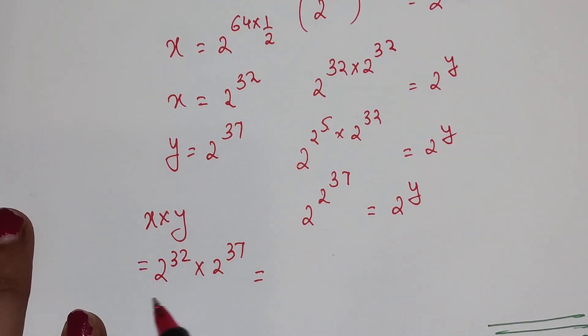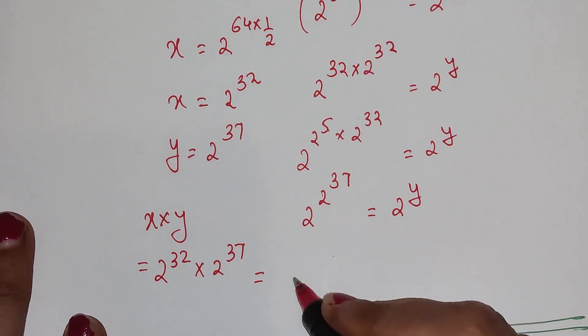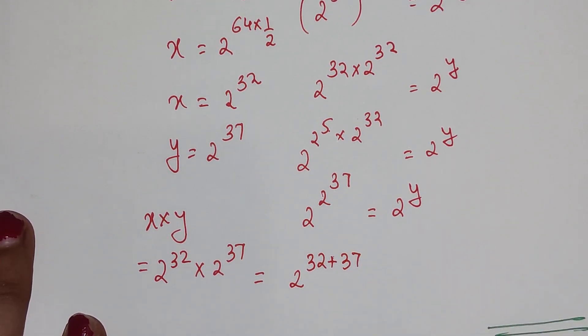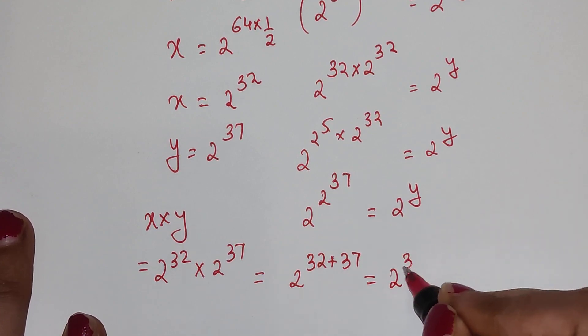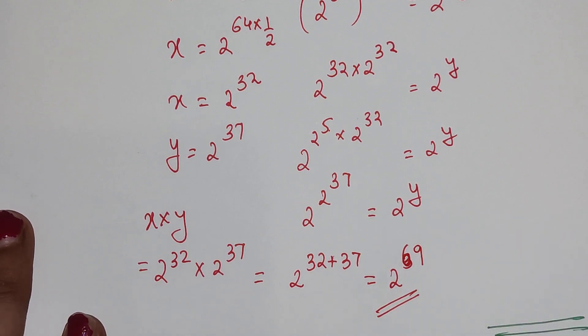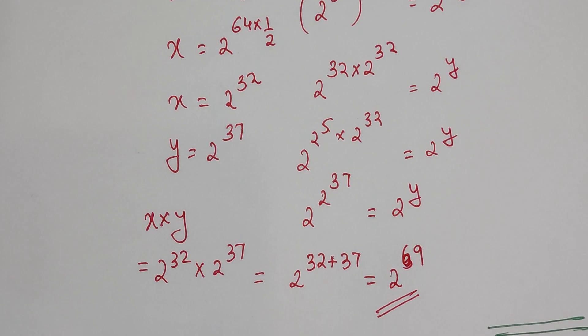Again here, the bases are the same, so I can add them: 2^(32 + 37). Since the bases are the same, the final answer is 2^69. That is my final answer for this question. Please like, share, and subscribe for many such videos.